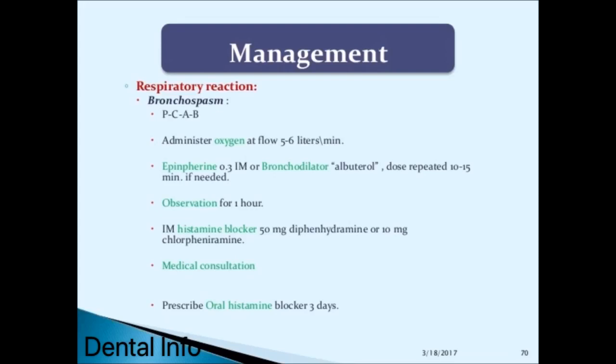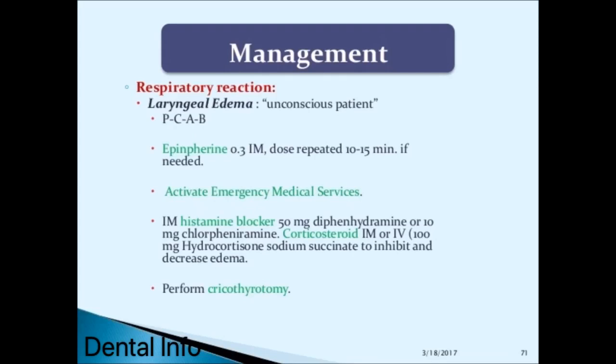Respiratory reaction—bronchospasm: follow PCAB, administer oxygen at a flow of 5–6 liters/min, administer epinephrine 0.3 mg IM or bronchodilator (albuterol), with dose repeated every 10–15 minutes if needed, observe for 1 hour, administer IM histamine blocker (diphenhydramine 50 mg or chlorpheniramine 10 mg), arrange medical consultation, and prescribe oral histamine blocker for 3 days.